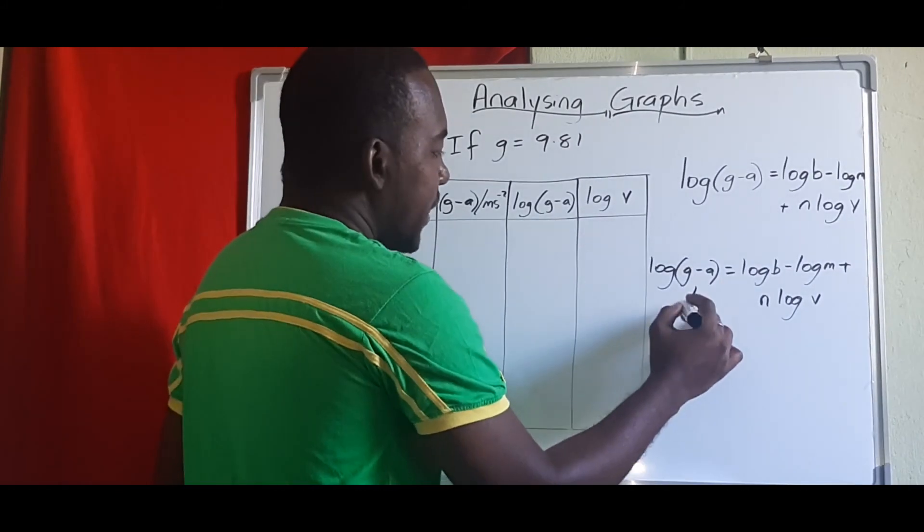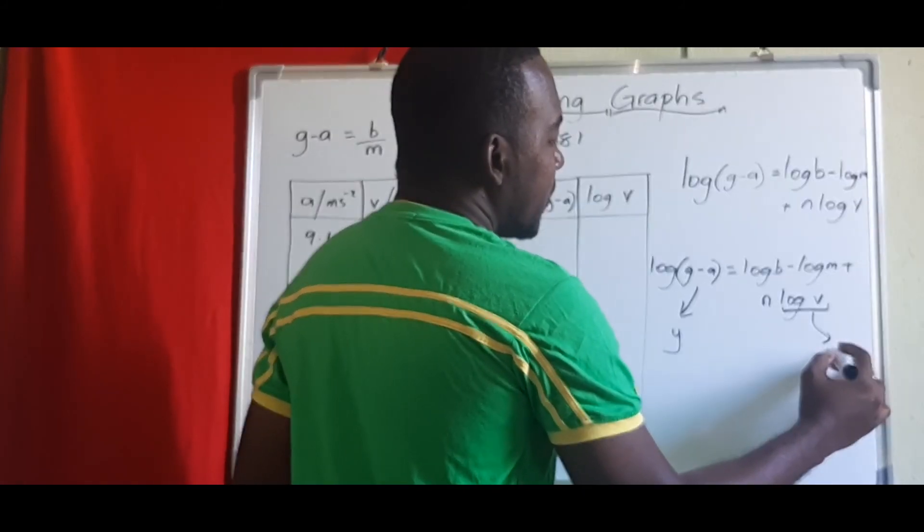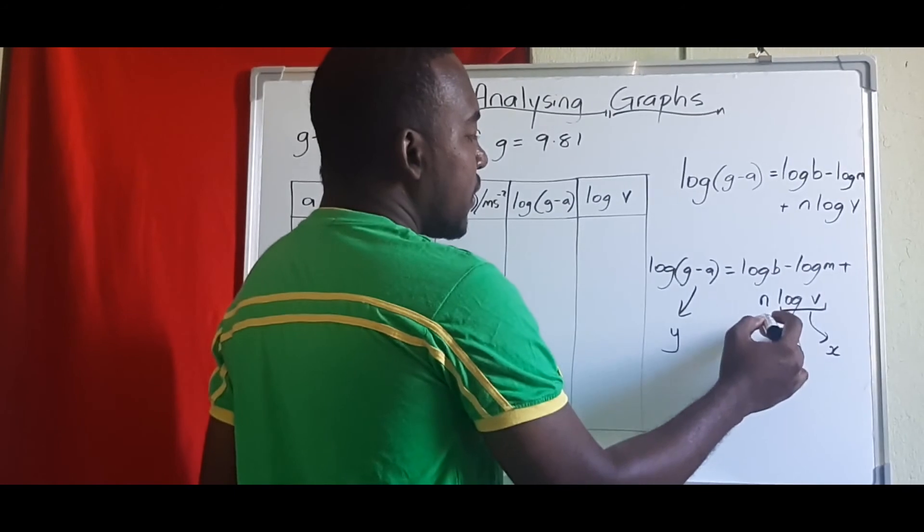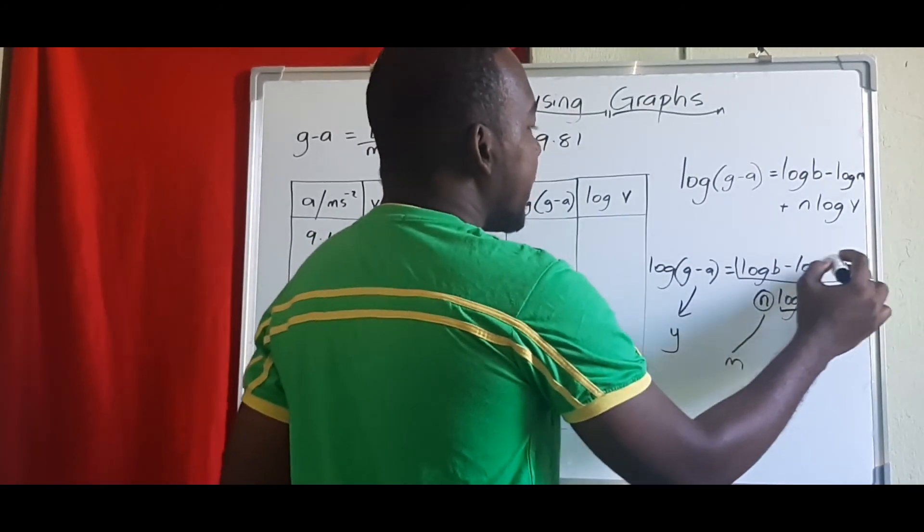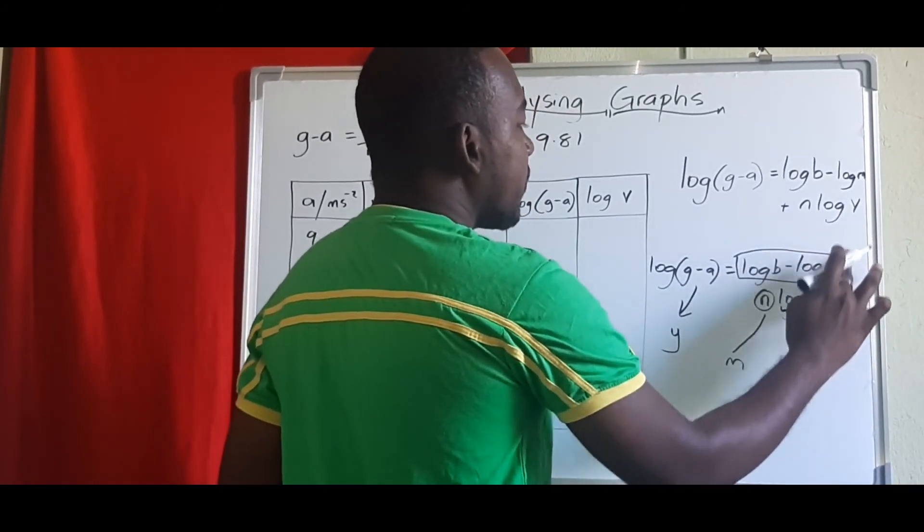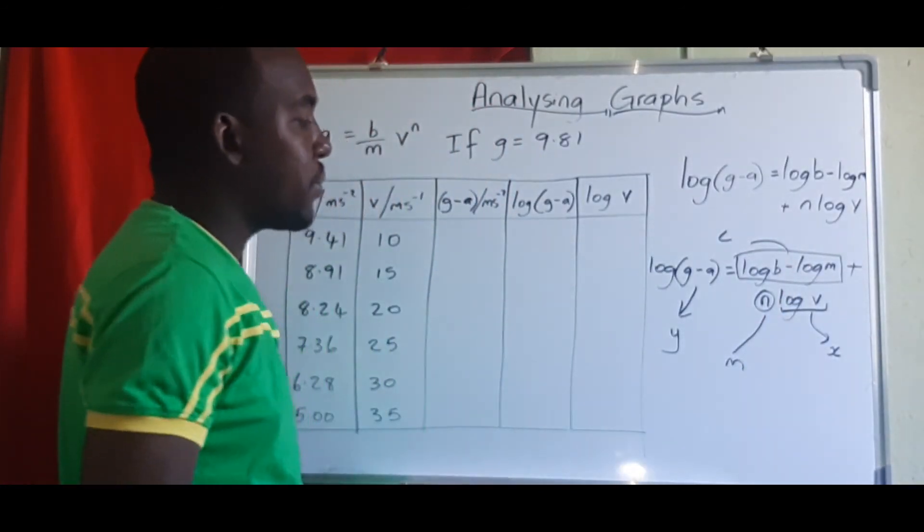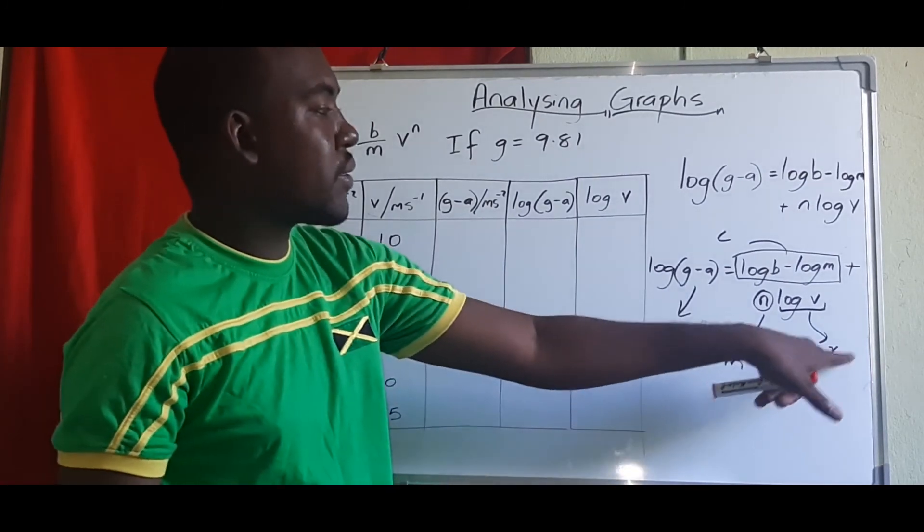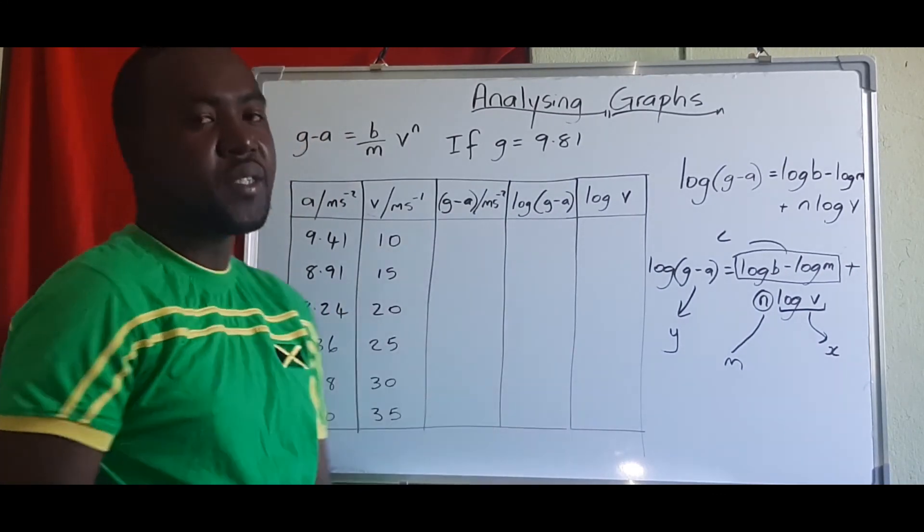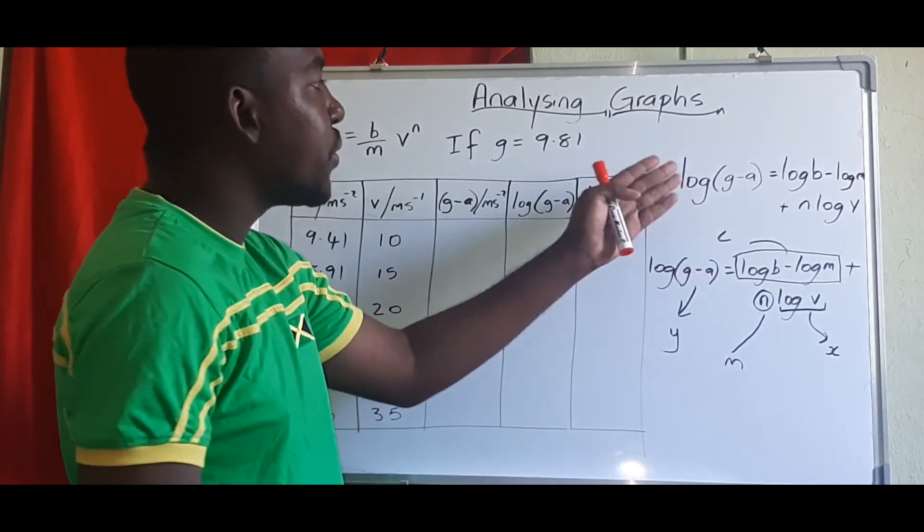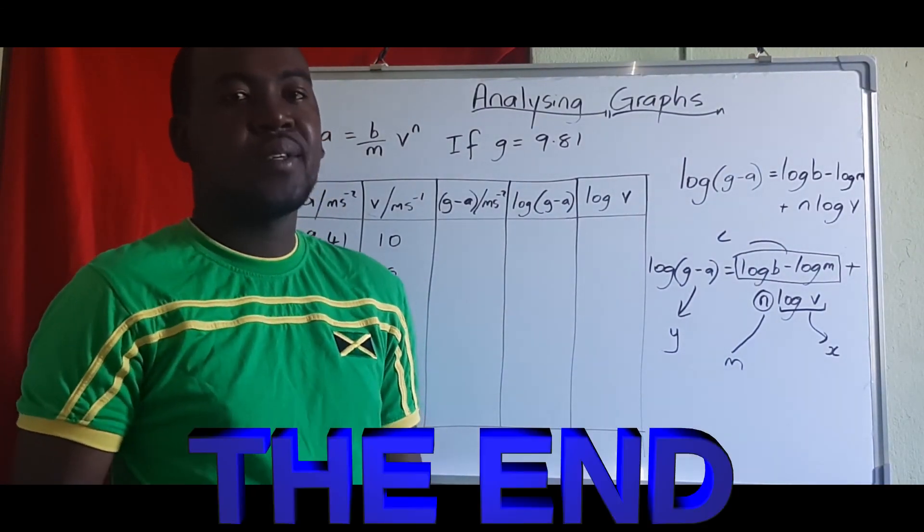So in this case, we have this being our y-axis. Log v being our x-axis, n would be our gradient, and log b minus log m would be our y-intercept. So y equals mx plus c. So we notice, guys, that whatever the equation is, we should be able, once we remember those rules for logs, that we can get these answers.